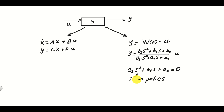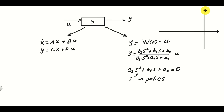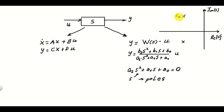The system is asymptotically stable if all the poles are strictly in the left half of the complex plane. Namely, if the horizontal axis is the real part of S and the vertical axis is the imaginary part of S, then the system is stable if all the poles are strictly in the left half of the complex plane — that is, they are here. If that's the case, the system is asymptotically stable.